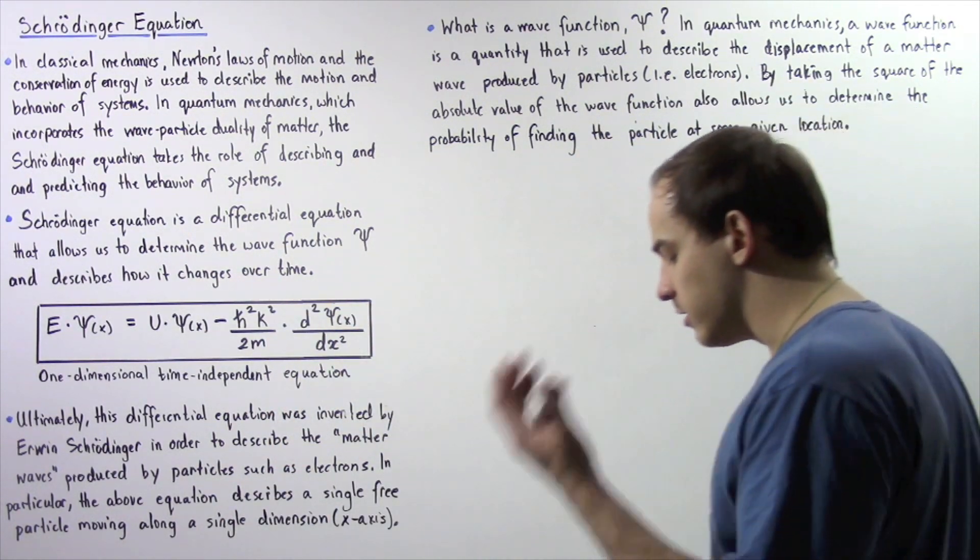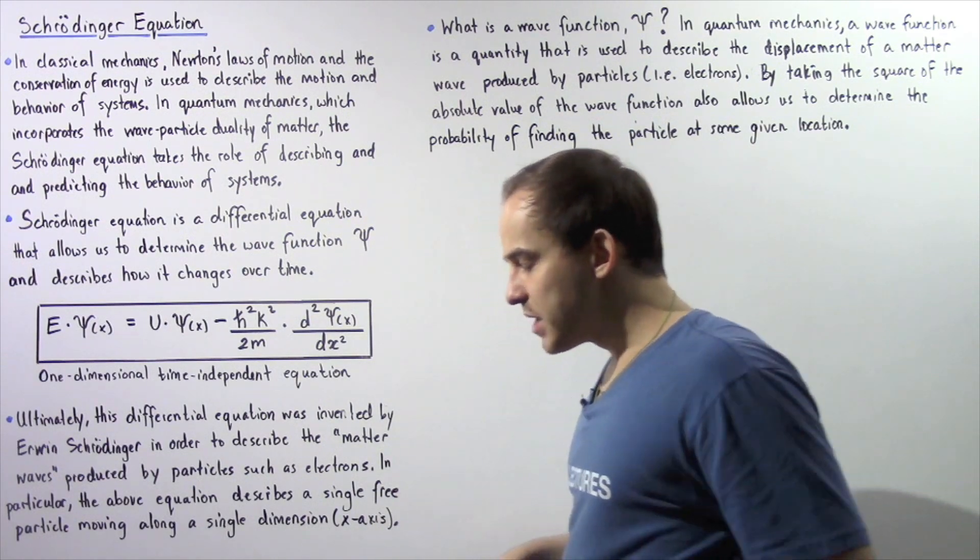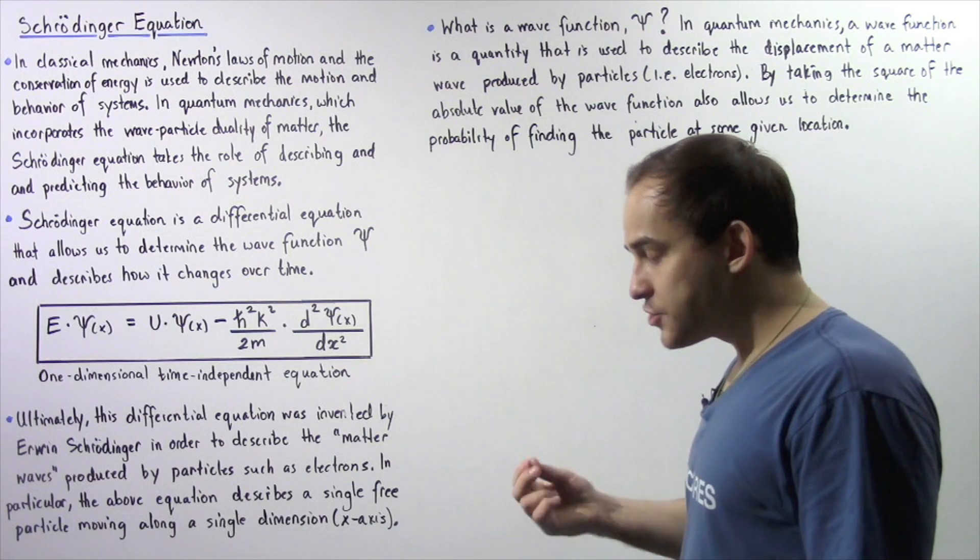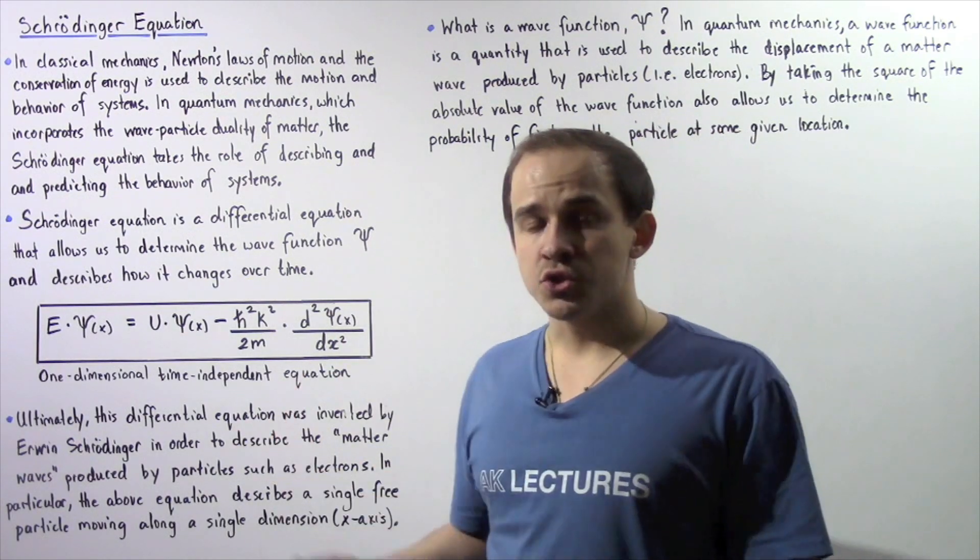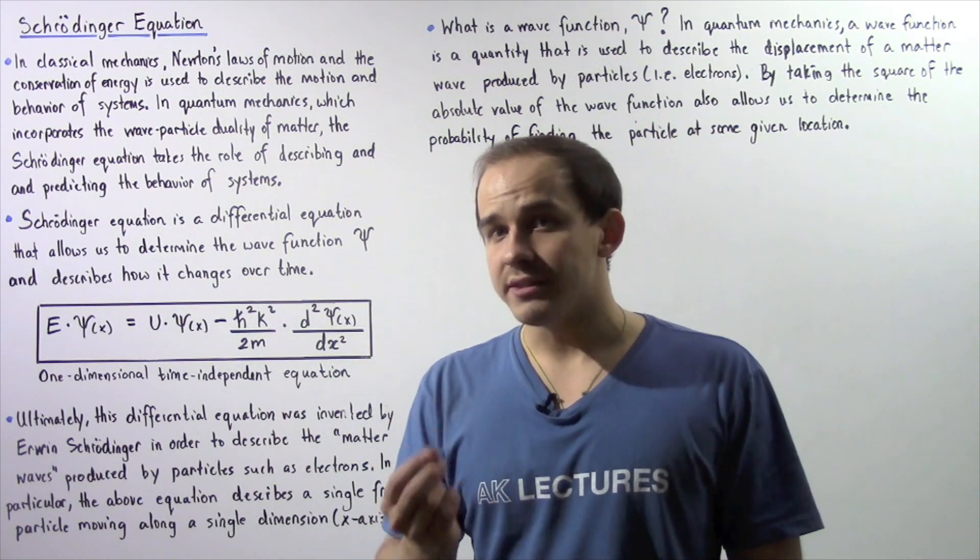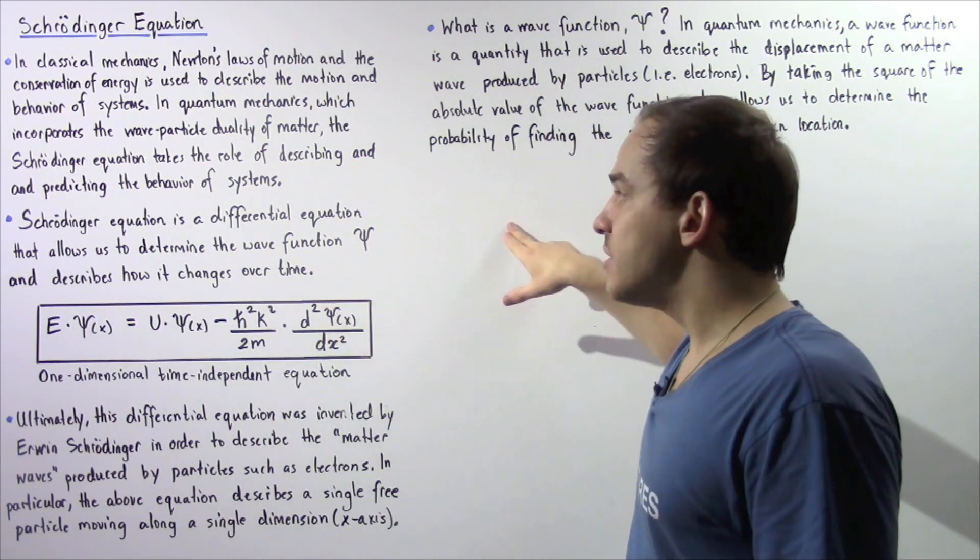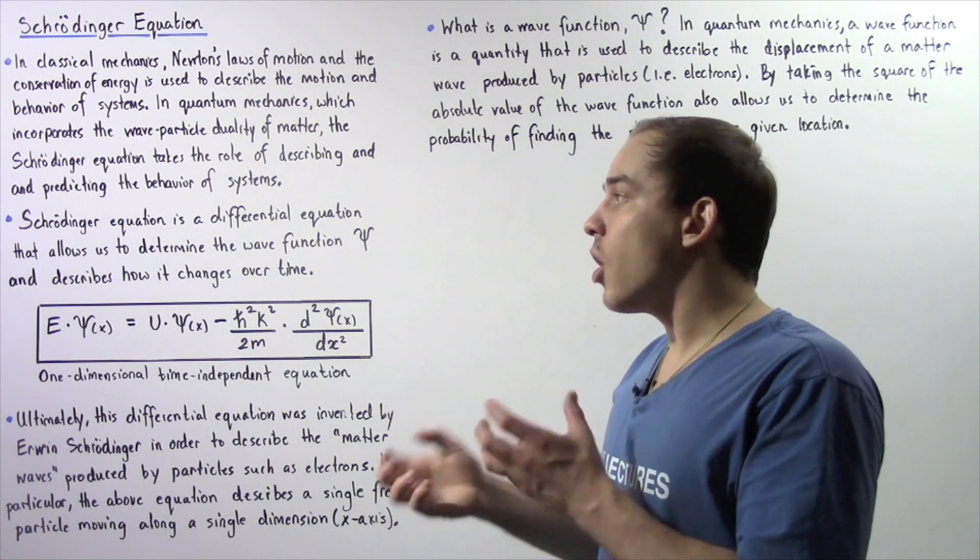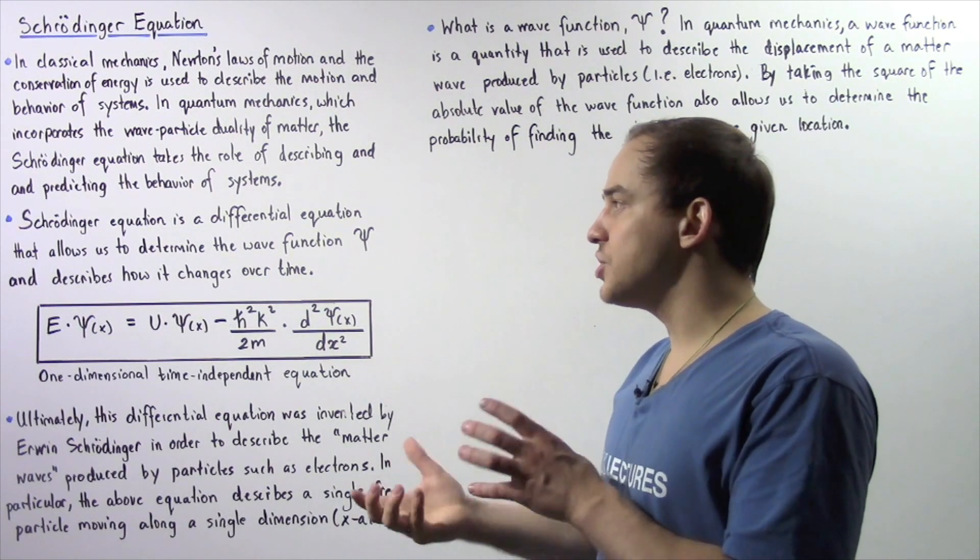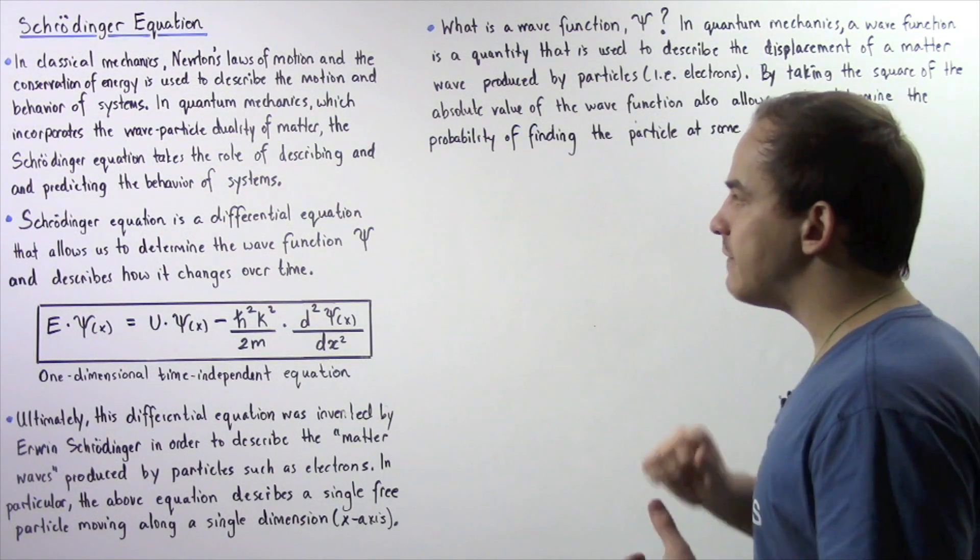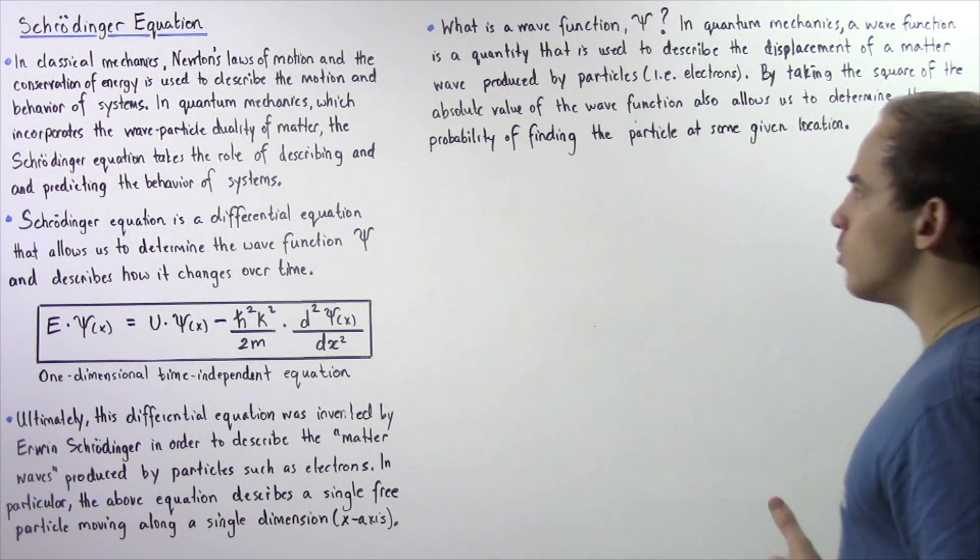So now Schrödinger equation is basically a differential equation that allows us to determine an important quantity in quantum mechanics known as the wave function, that basically describes how our particle or our electron changes with respect to time. Now we'll discuss what the wave function is in just a moment.